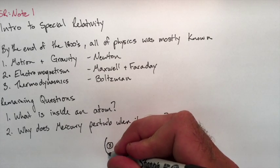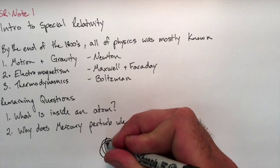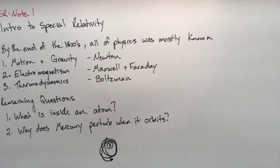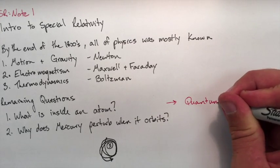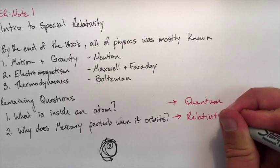For the atom, eventually in the early 1900s, we would come up with quantum theory that would explain what goes on inside of an atom. And for Mercury's perturbation, we would use relativity, which is something that we're going to study in this unit.